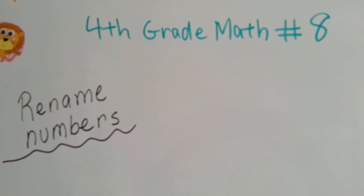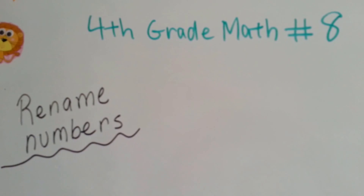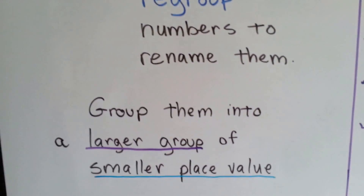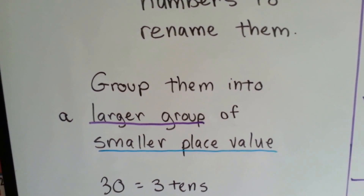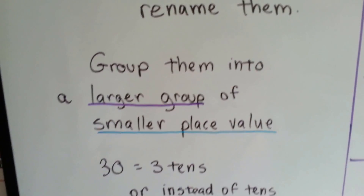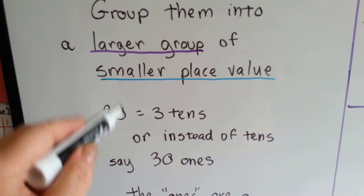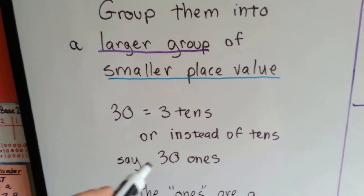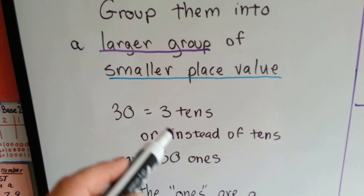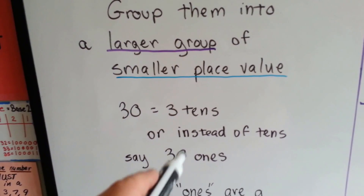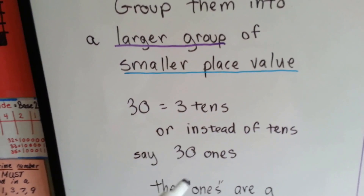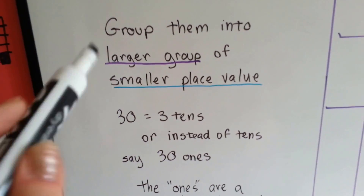Fourth grade math number eight: rename numbers. What do we mean by rename numbers? We can regroup numbers to rename them. You group them into a larger group of a smaller place value. So, this thirty right here means three tens. We could also say it means thirty ones. We take a larger group, thirty, and put it into the smaller place value of ones instead of just three tens. That is how we rename them.